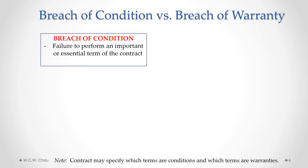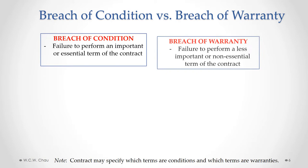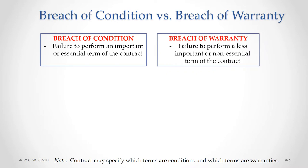A breach of condition is where there has been a failure to perform an important or essential term of the contract, while a breach of warranty is the opposite — it's a failure to perform a less important or non-essential term of the contract. The difference between the two is significant because the legal consequences that flow from the breach are different.